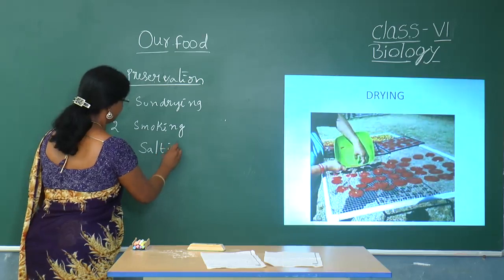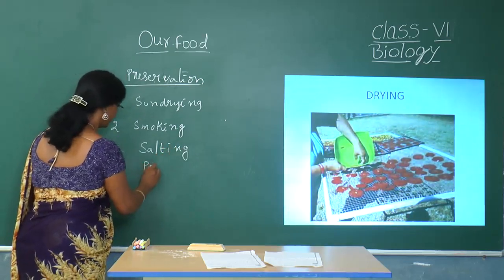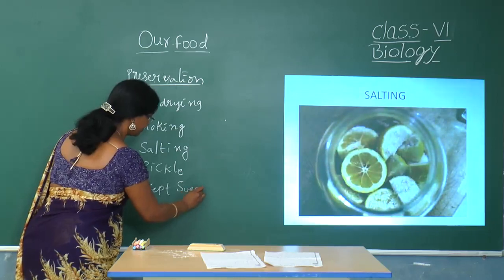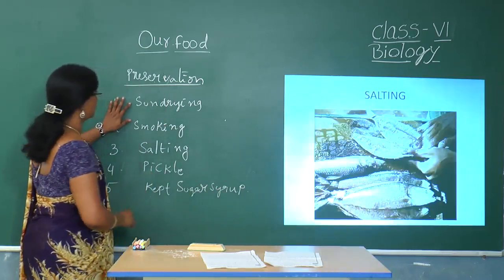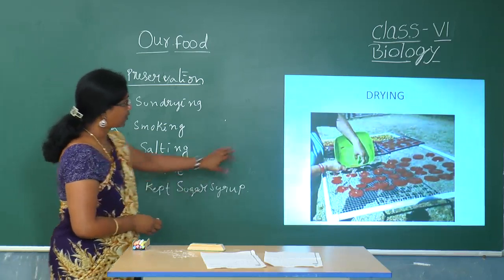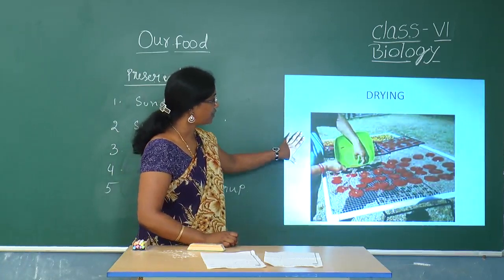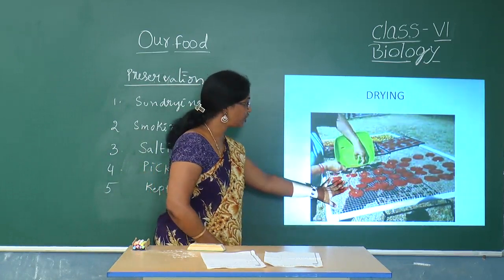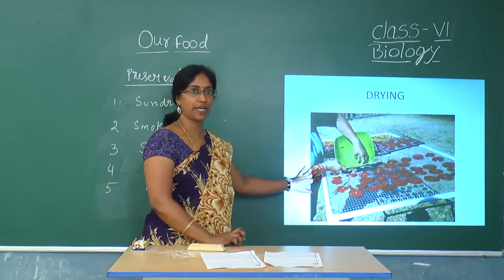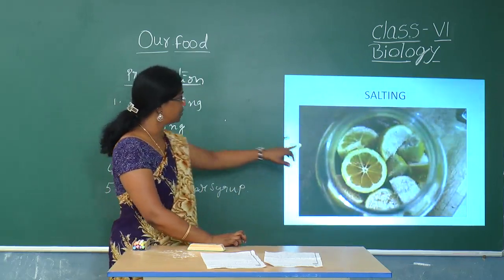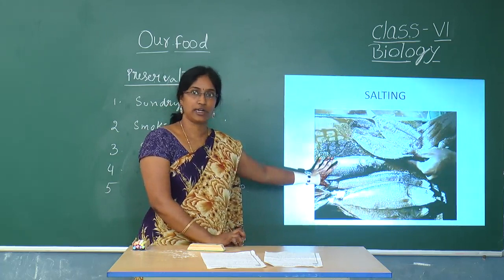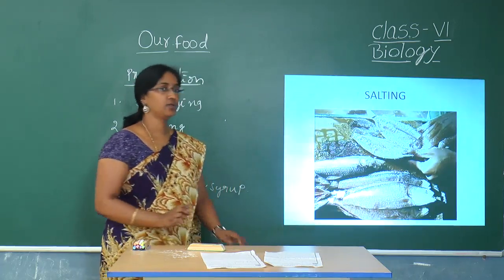The different methods of preservation include sun drying, smoking, salting, pickling, and keeping in sugar syrup. Drying, that is sun drying: most vegetables are sun dried — this is one of the ancient methods and very effective. Because of drying, moisture evaporates and there is no scope for microbes to grow. The second method is salting: salt is added to vegetables, and even fish is also preserved by this process. Salt acts as the preservative and prevents the growth of microbes.